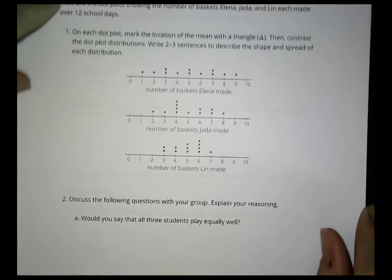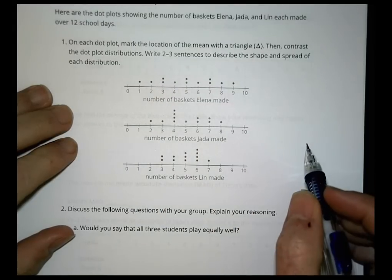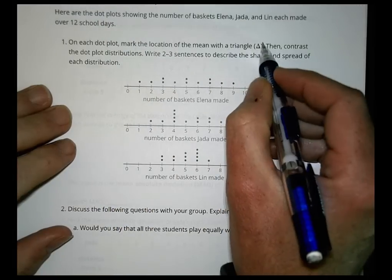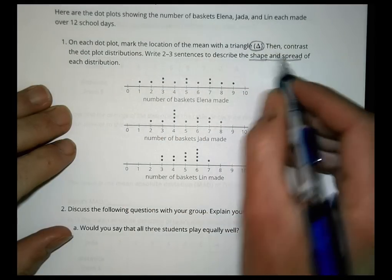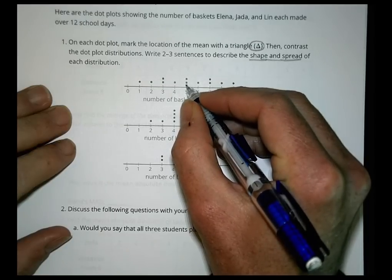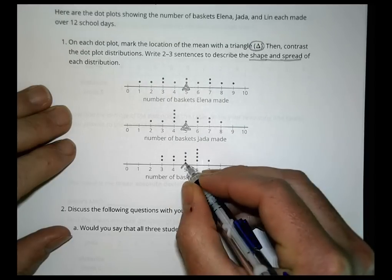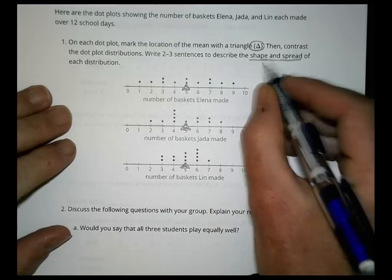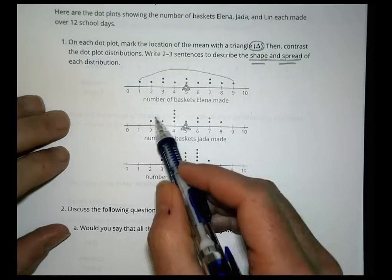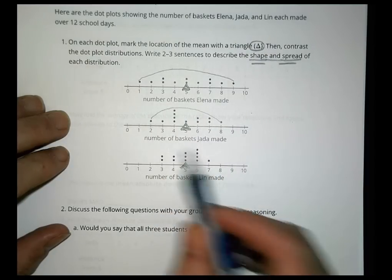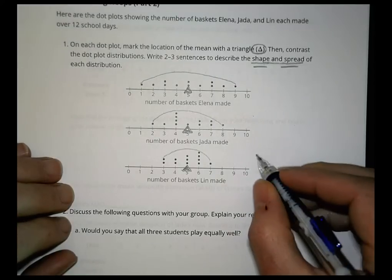Here are the dot plots showing the number of baskets Elena, Jada, and Lynn each made over 12 school days. On each dot plot, mark the location of the mean with a triangle, then contrast the dot plot distributions and write two or three sentences to describe the shape and spread. Our mean was at 5. When we look at the shape and spread, Elena's are much more spread out from 1 to 9, Jada's are a little bit tighter, and Lynn's are all closer together. The spread gets less — a narrow spread.